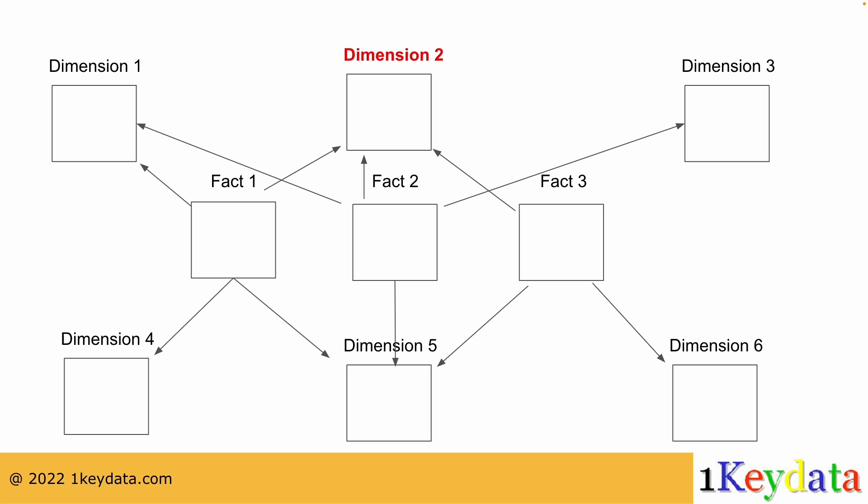Here, dimension 2 and dimension 5 are both examples of a conformed dimension, as they are both linked to from all three fact tables.